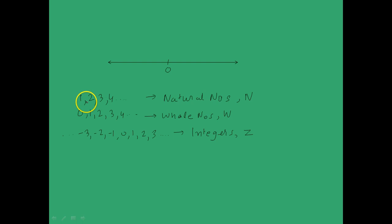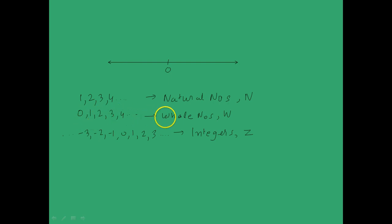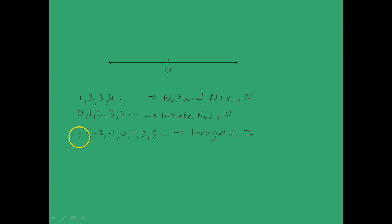So to recap: 1, 2, 3, etc. is given by natural numbers represented by capital N. 0, 1, 2, 3, 4, etc. represent whole numbers given by W. And if you include all the negative numbers possible like minus 1, minus 2, minus 3, along with 0, 1, 2, 3, you get integers represented by Z.